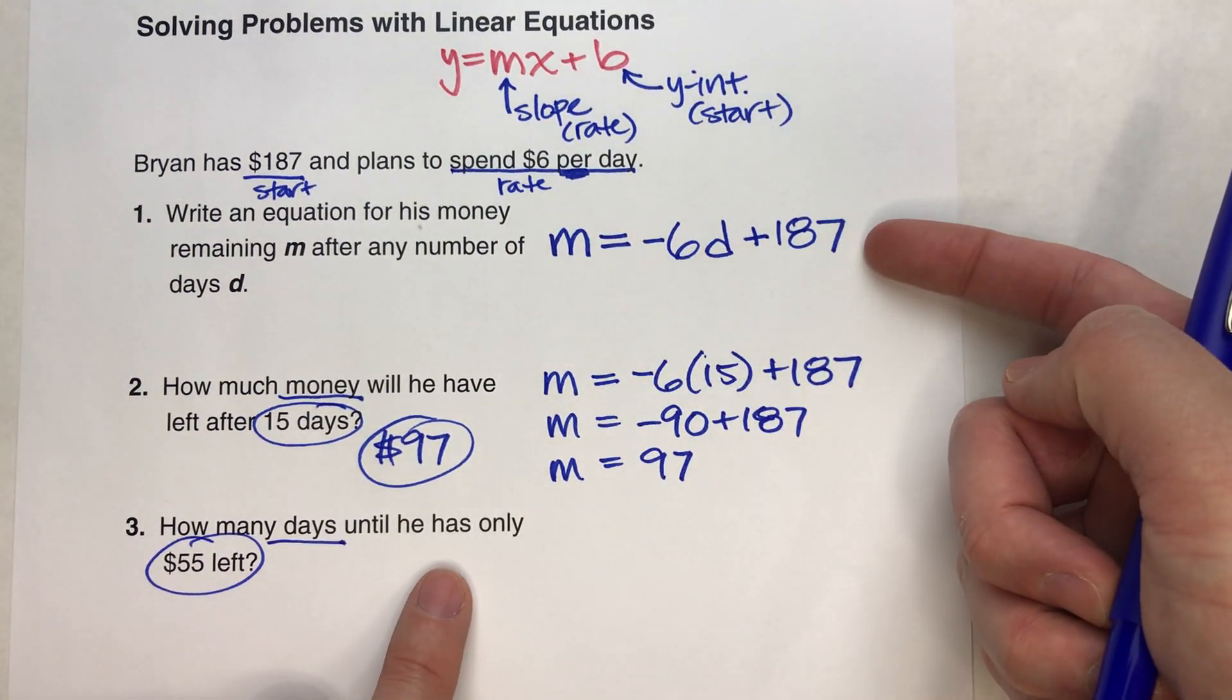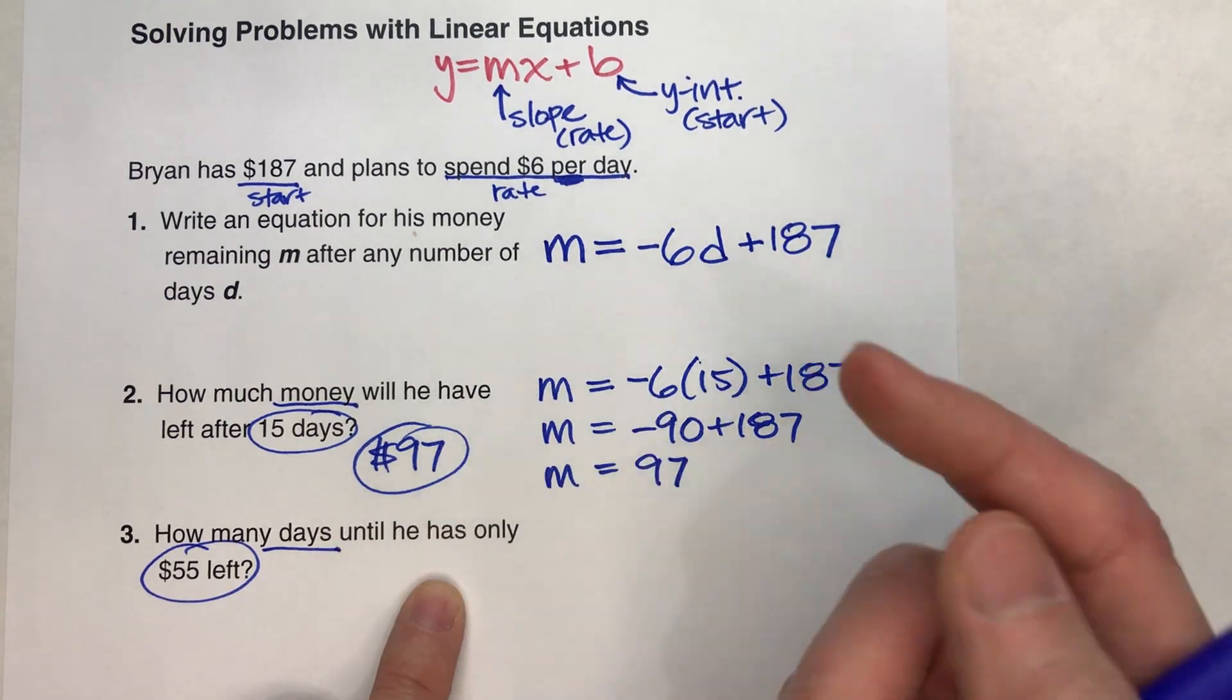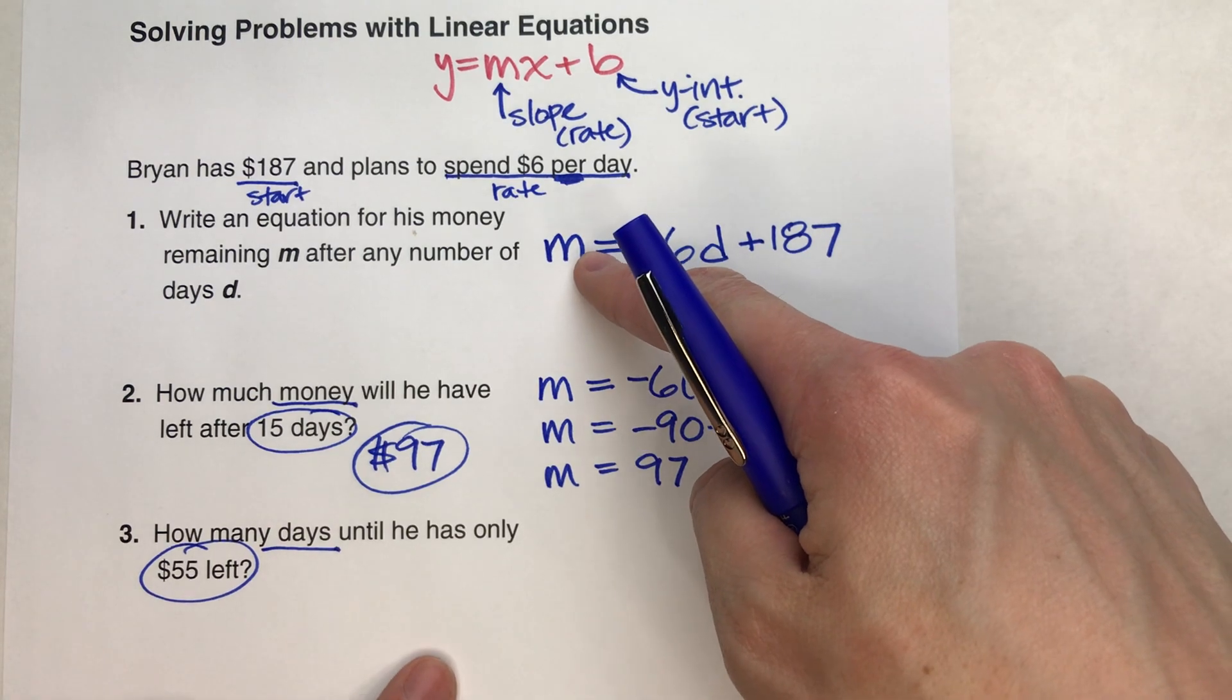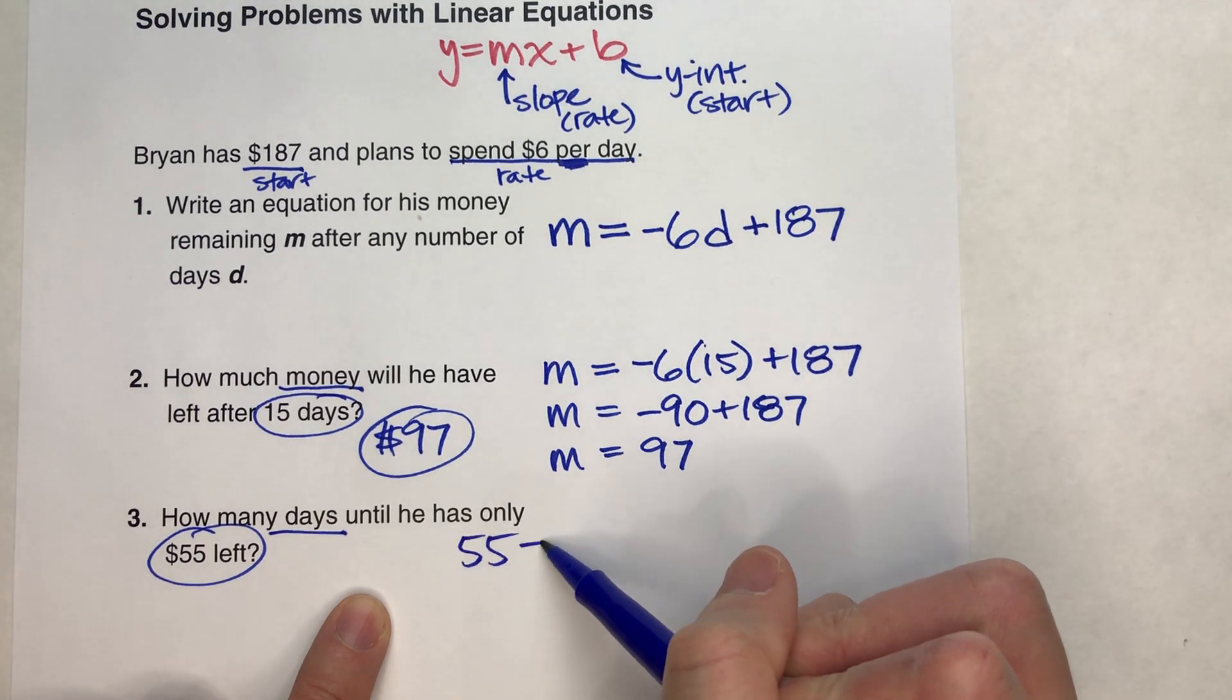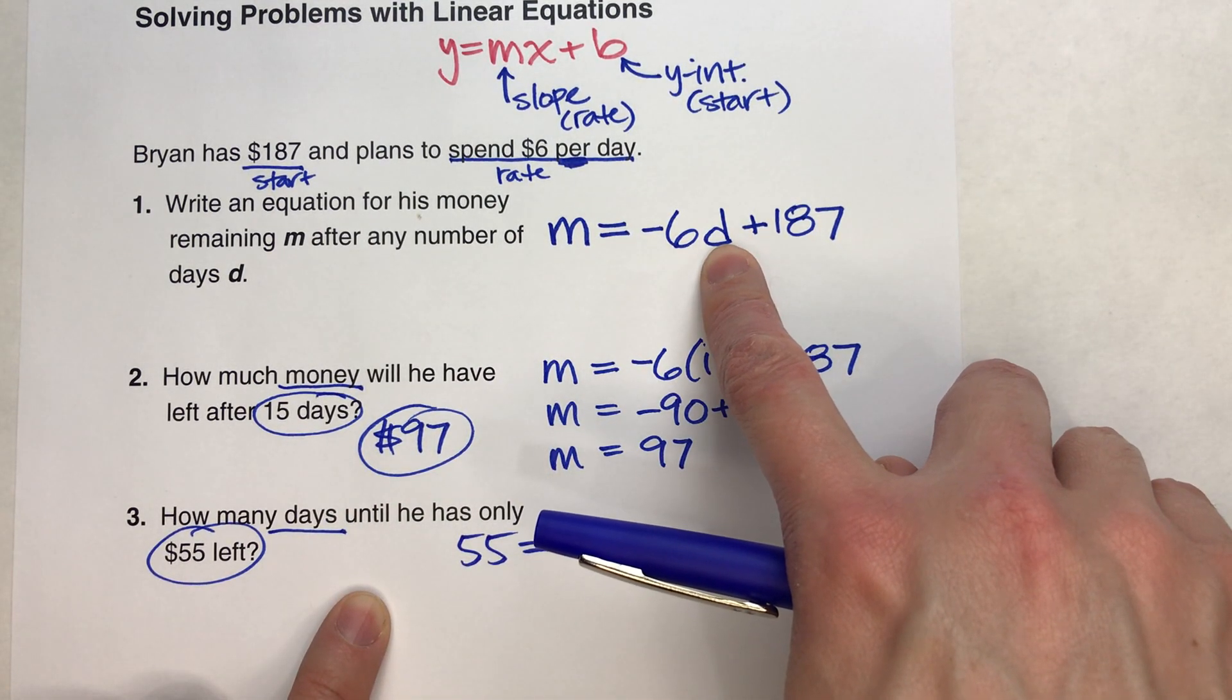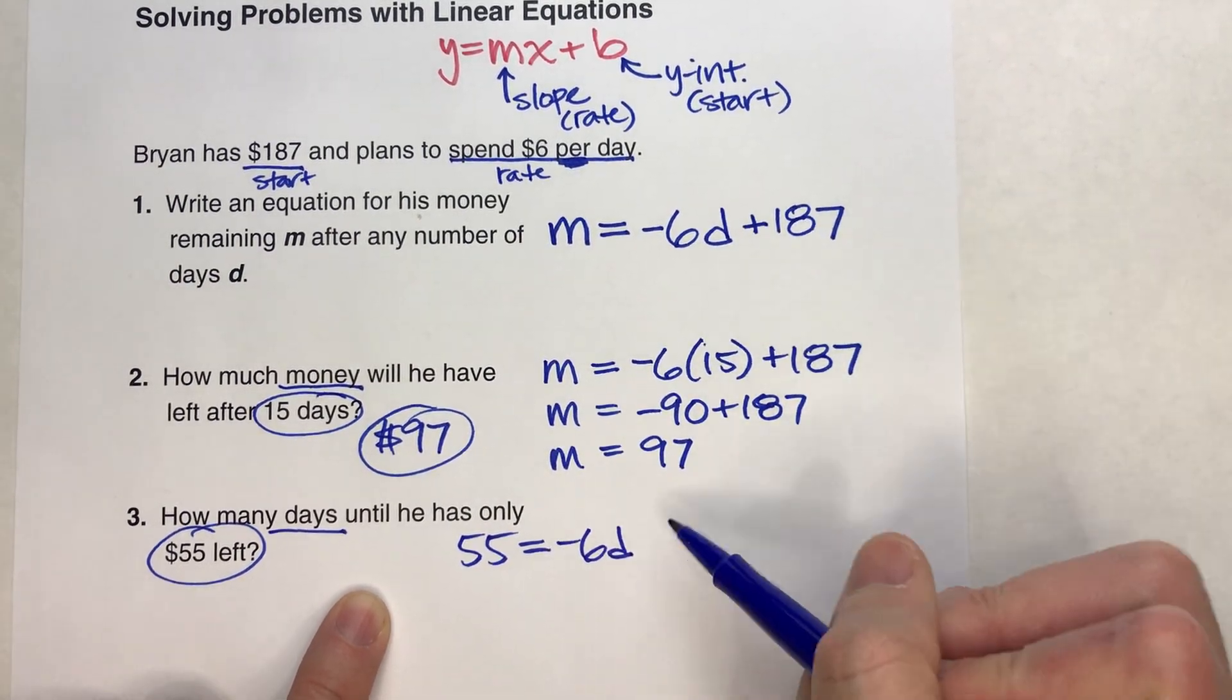So if we look back at our equation, we're going to put that 55 into our equation and figure out the days. So notice this time, because we know the money, we're going to put the 55 in for m. So instead of m equals, we'll write 55 equals. And we don't know the days, so we'll leave the d in there for the days. Negative 6d plus $187.